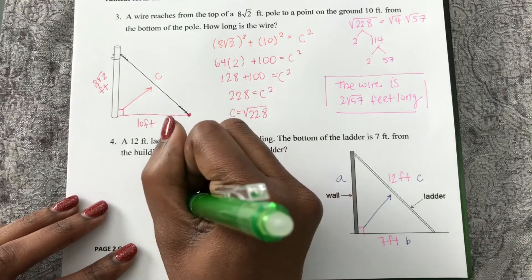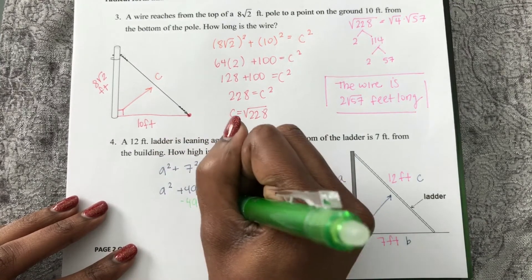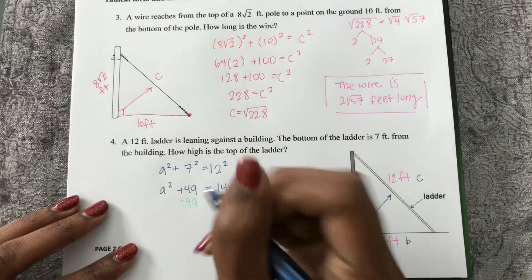So to isolate A squared, I subtract 49 from both sides.